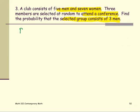We are going to find the probability of getting a group of three men to attend a conference. That would be N(E) divided by N(S). N(S) is the number of outcomes of the sample space, or all possible combinations. This is a combination because the order doesn't matter.